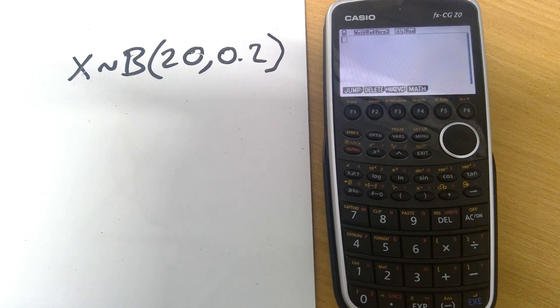This video will show you how you can use your Casio graphical calculator to work with binomial probability questions. I'm using the CG20 but the same method will work with a CG50, the current newest model, or in fact any of the older previous models that have this capability.